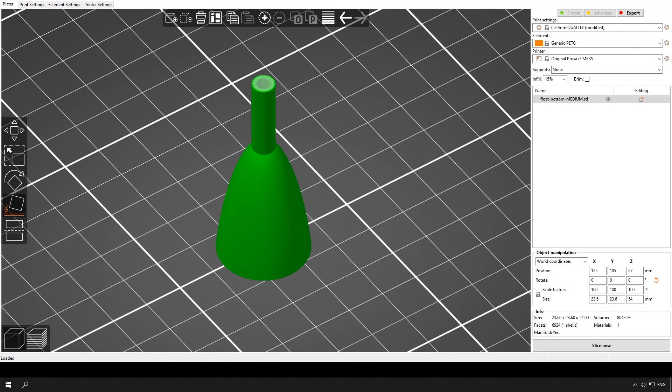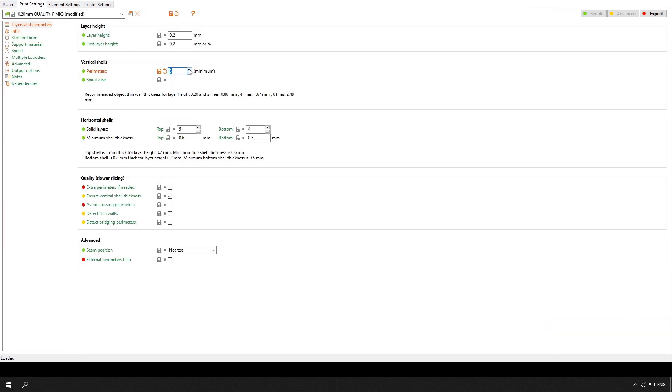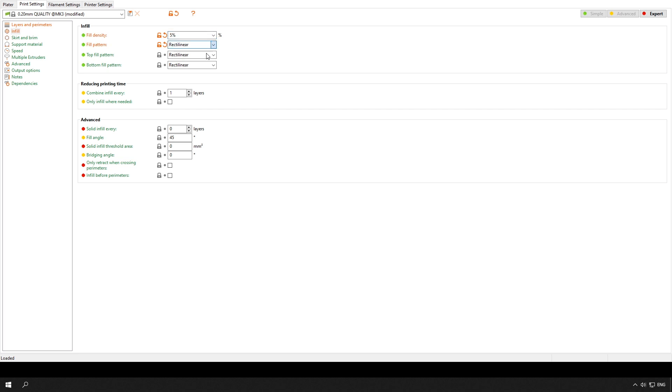Now I need to open the final model in the slicer. A slicer is a software that converts 3D models into instructions understandable by 3D printers.